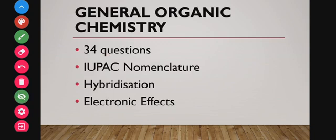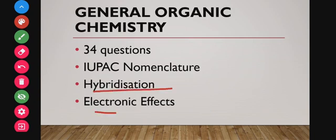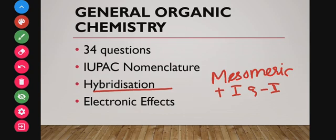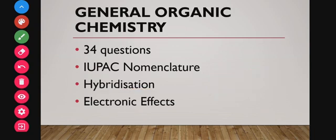The next topic is general organic chemistry, from which around 34 questions were asked by analyzing the past 10-year papers. You have to know IUPAC nomenclature well — practice more questions on it so you can speed up your answers. Then hybridization, and electronic effects: mesomeric effect (plus M and minus M), inductive effect (plus I and minus I), and hyperconjugation. You also need to know the stability order of carbocations related to mesomeric effects.